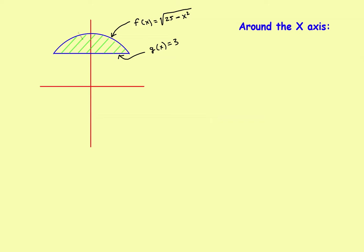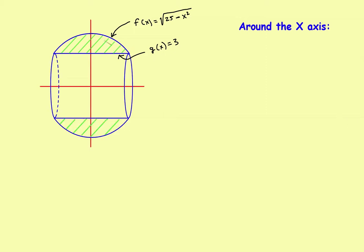Suppose you had two functions: a top function and a bottom function. The top function is the square root of 25 minus x squared, so it's part of a circle. The bottom function is just the horizontal line y equals 3. You'd like to take this shaded area in green, roll both functions around the axis, and they will sweep out a certain volume — what looks like a sphere with a hole through the middle of it. You want to calculate the volume swept out, essentially how much metal it would take to cast this object.